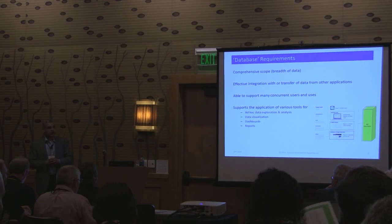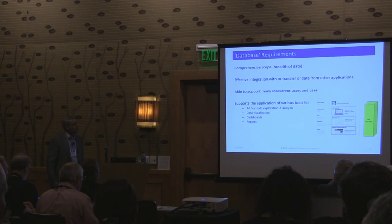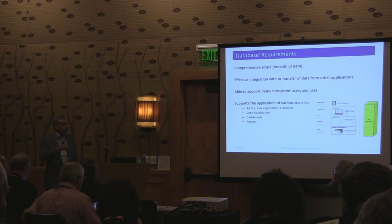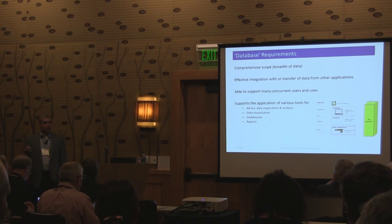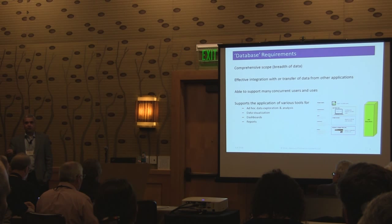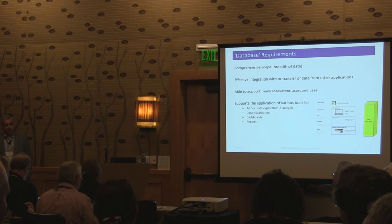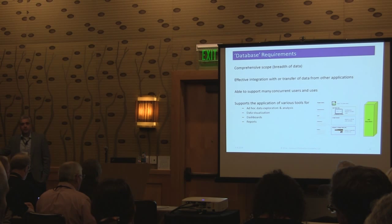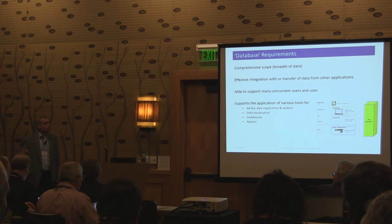One of the requirements is a comprehensive scope of data. Given the sorts of dashboards we provide that go all the way down to drilling down on an individual — seeing the activities they've participated in, the individual gifts they've given — we really need all the data. Nothing is more frustrating to an end user than to provide them information saying you've got six prospects rated at this level but not give them the ability to drill down and see who the six are, or to see the status of a proposal, whether a gift came in yet.